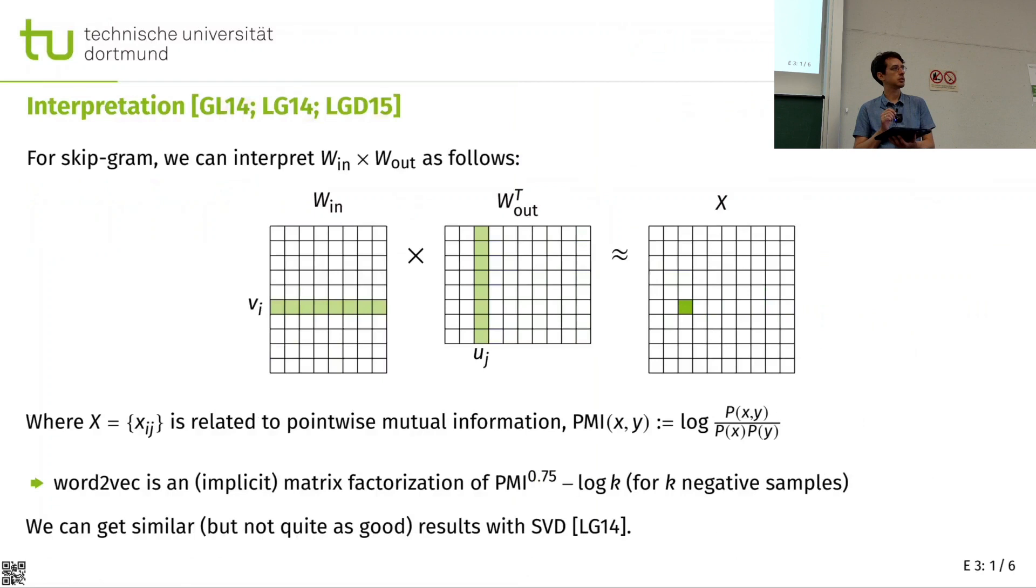And it's this later work that tried to understand what is going on. It turns out that we can consider this to be a type of a matrix factorization. We have kind of an input vector, we have this output vector. And if you multiply them, which is what is happening in the center of Word2Vec, there is this multiplication of these two matrices. And we're trying to find the maximum of this multiplication.